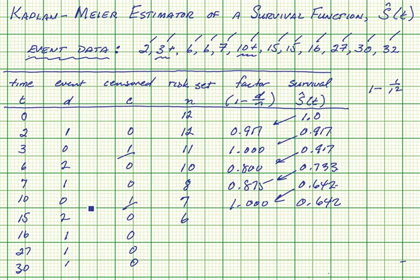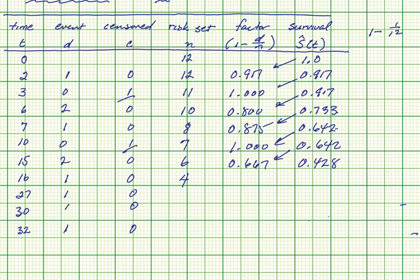At time fifteen, we have two failures, so one minus two over six gives us 0.667. We do our multiplication and get 0.428. Two from six leaves four in the risk set. At time sixteen, we've got one failure, so 75% survive. We do our multiplication and get 0.321. One from four leaves three.